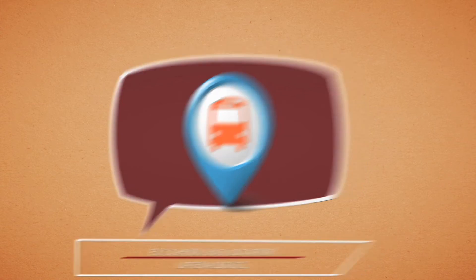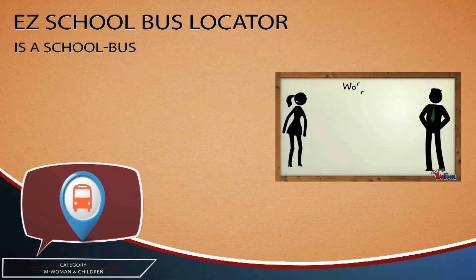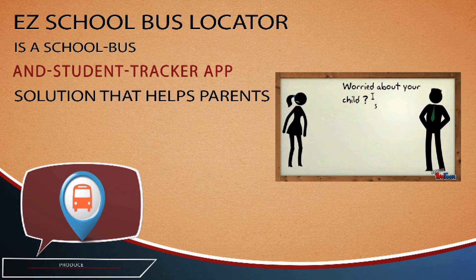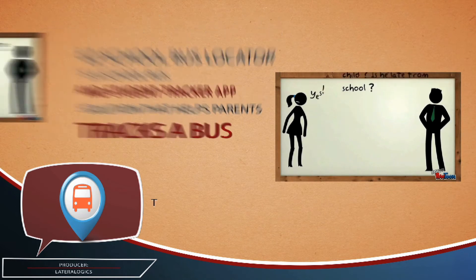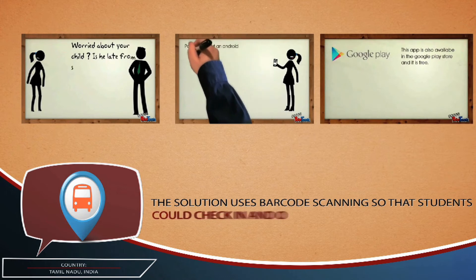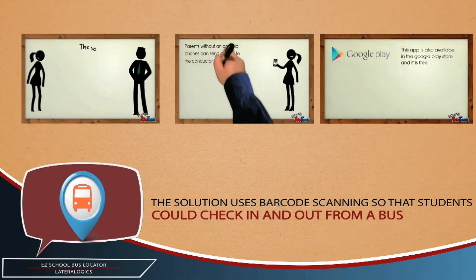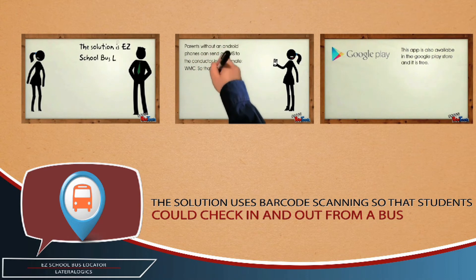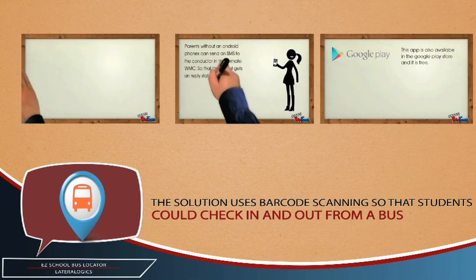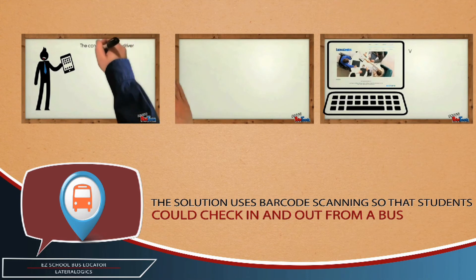Easy School Bus Locator is a school bus and student tracker app solution that helps parents track a bus. The solution uses barcode scanning so that students can check in and out from the bus, GPS to track the bus location, and automated SMS messages to keep parents informed.